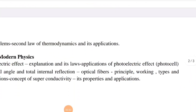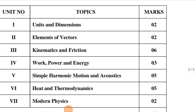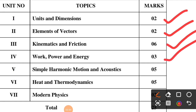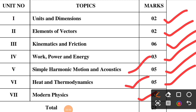These 7 topics are covered in physics. The mark weightage for each: units and dimensions - 2 marks, elements of vectors - 2 marks, kinematics and friction - 6 marks, work power and energy - 3 marks, simple harmonic motion - 5 marks, heat and thermodynamics - 5 marks, modern physics - 2 marks. Heavy weightage topics are simple harmonic motion, heat and thermodynamics, and kinematics - together 16 marks out of total 25. So spend more time on these 3 topics.